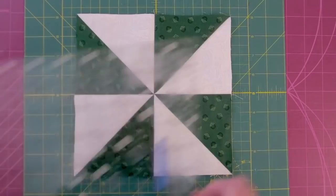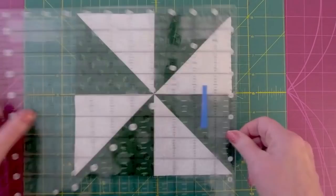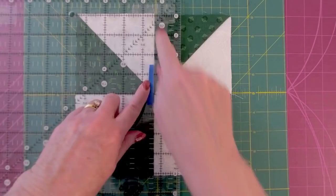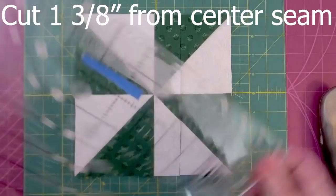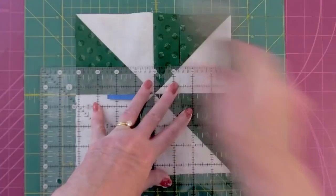Now our pinwheel should measure eight and a quarter by eight and a quarter, which it does. Good. Now we're going to cut this into nine sub blocks. And we're going to do this by cutting one and three eighths of an inch from the center seam. And if you notice, I have my tape on the ruler that makes sure I line the center seam up with the correct line on the ruler.